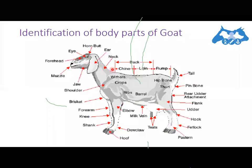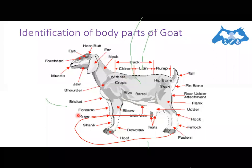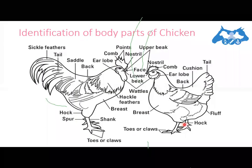For goat, almost all structures are the same. There is no clear-cut difference in the external body features of the goat compared to sheep and cattle. The last species to cover is the identification of body parts of the chicken.